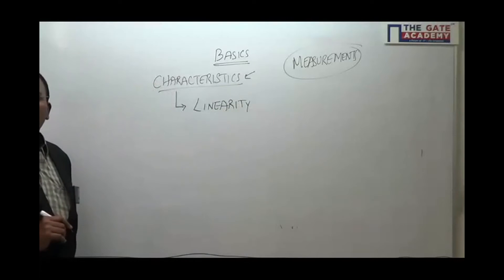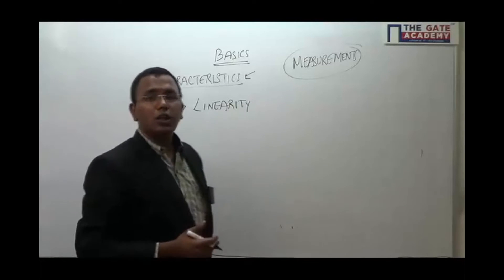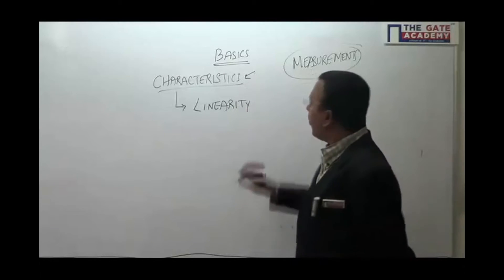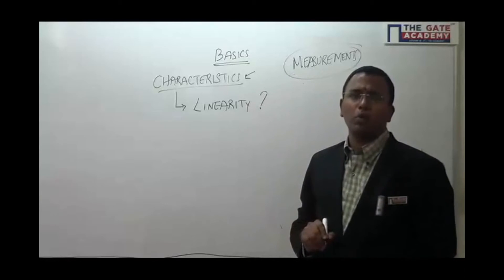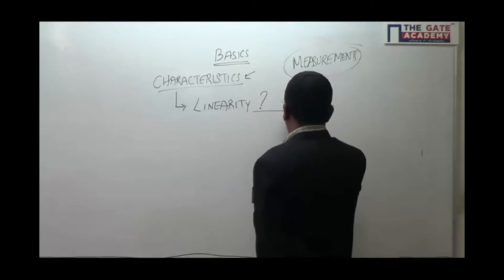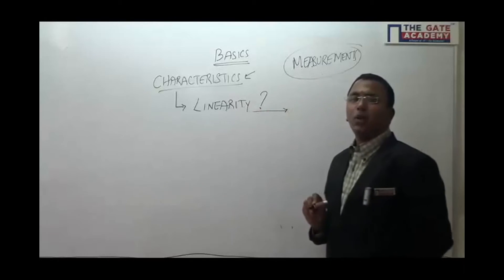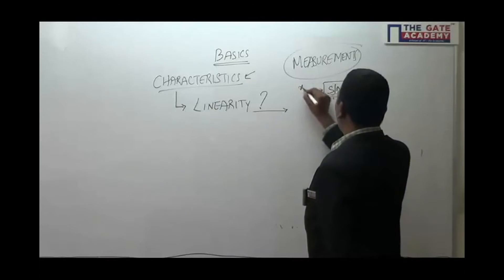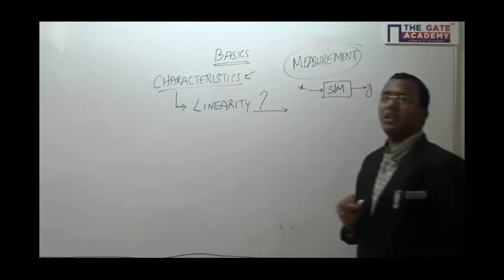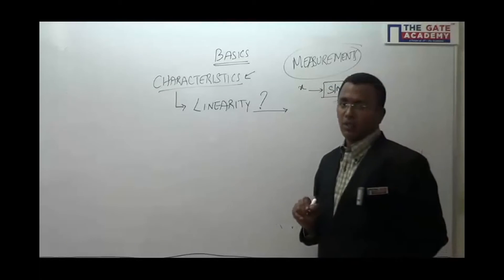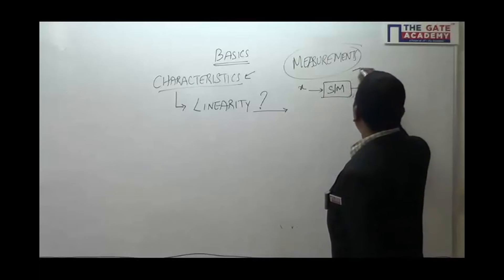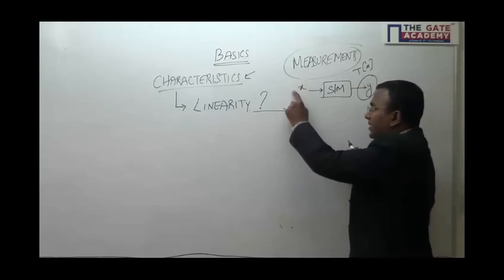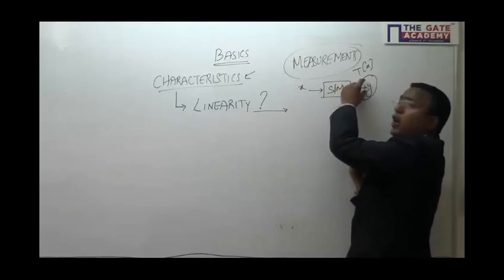The first characteristic we expect is linearity. We want our measurement system to have a linear relation — the system should have the linearity property. Why linearity? If I have a system, I give an input called x and get an output called y. I want linear behavior, meaning the output y is a transformation of x — not Z-transform or Fourier transform, but the signal x getting transformed to the output y.